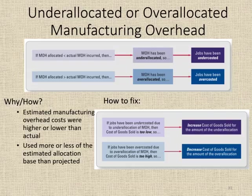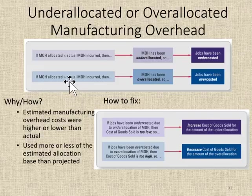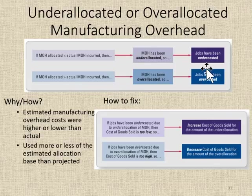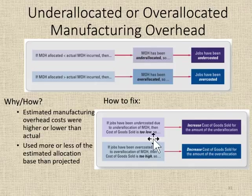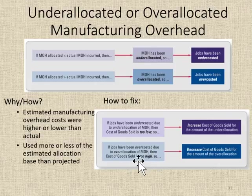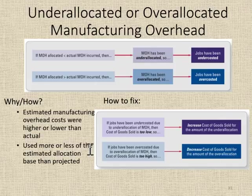This creates a problem because our manufacturing overhead allocated was greater than our actual manufacturing overhead. As a result, our jobs had been over-costed — we put more cost into those products than we actually incurred. If our jobs have been over-costed due to over-allocation, then our cost of goods sold was too high, so we need to decrease cost of goods sold by the amount of the over-allocation.